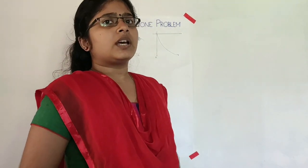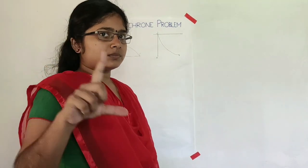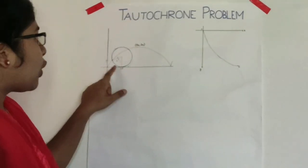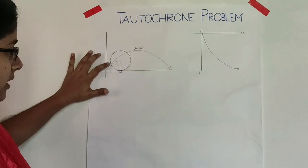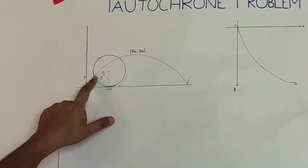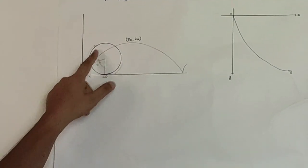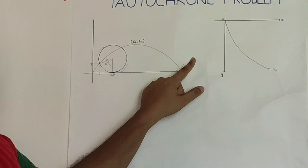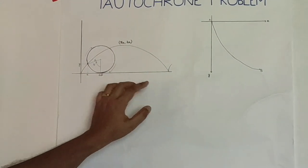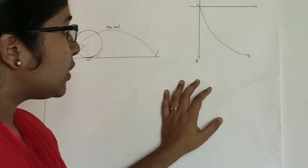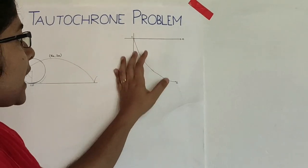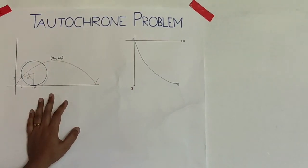So what is a cycloid? A cycloid is the path of a point on a circle — the path that the point covers as the circle rotates along the axis. This is how the cycloid looks like. In the Tautochrome problem we are trying to show that the cycloid is the solution.